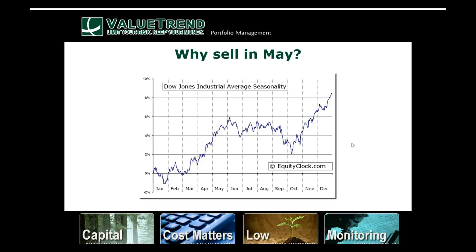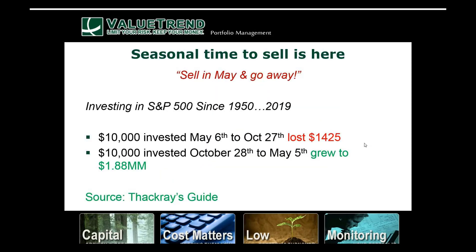Another cycle is seasonality. The Dow Jones, S&P, and TSX all have a similar cycle — they tend to move up between October and May and tend to do relatively less performance over the summer. Brooke Thackeray's brand-new Thackeray's Guide shows that between May and October, if you'd put $10,000 in since 1950, you would have lost $1,400, versus if you'd bought in October and sold in May, you'd have made $1.8 million. What would you have rather done?